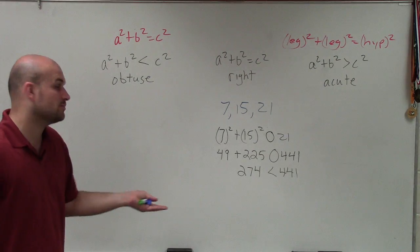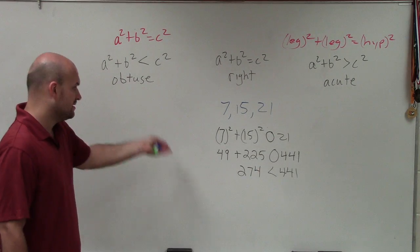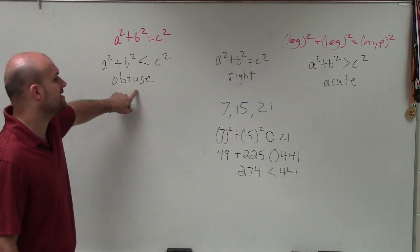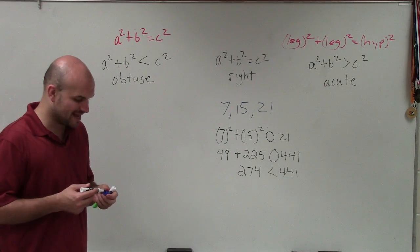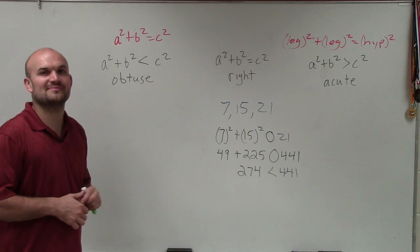So since the sum of the legs squared is less than the hypotenuse squared, we can determine that this is an obtuse triangle. So there you go, ladies and gentlemen. That is how you use your Pythagorean Inequality Theorem. Thanks.